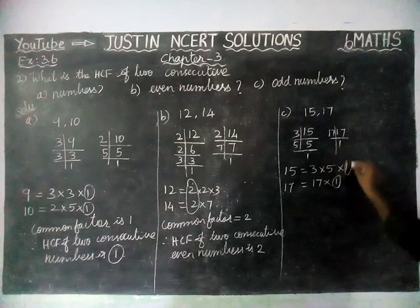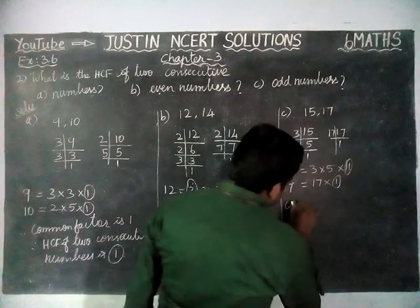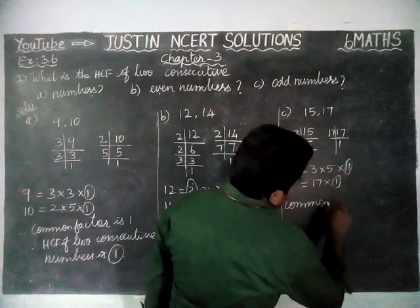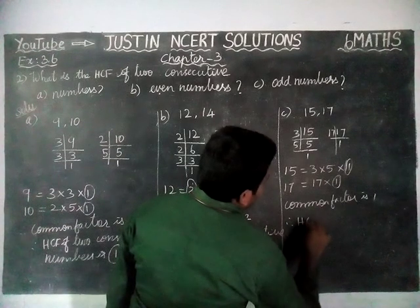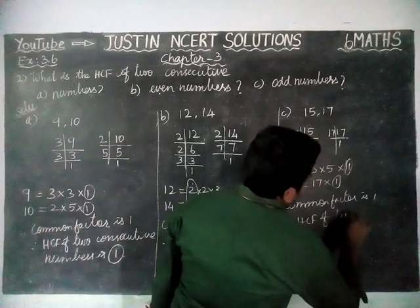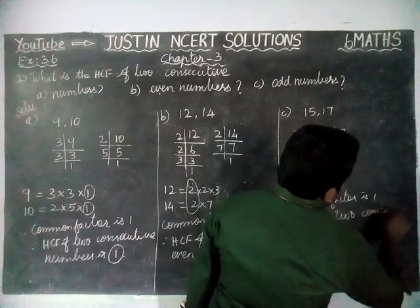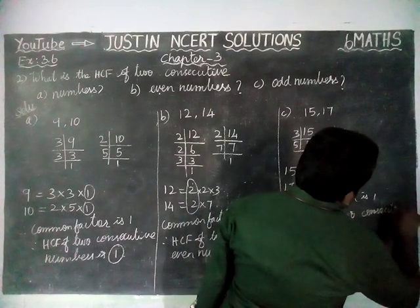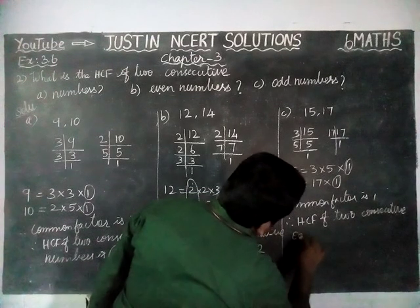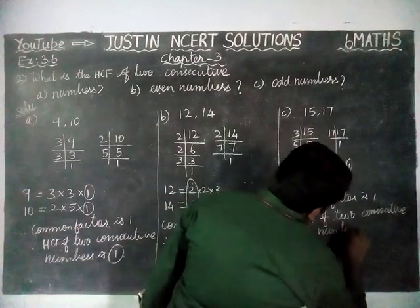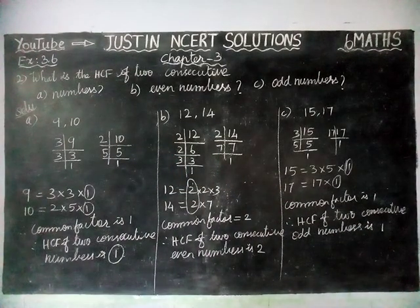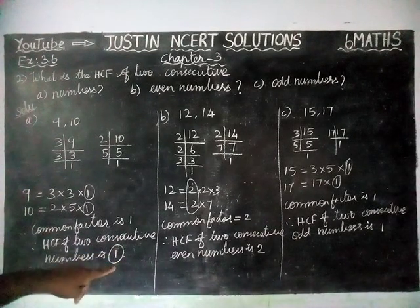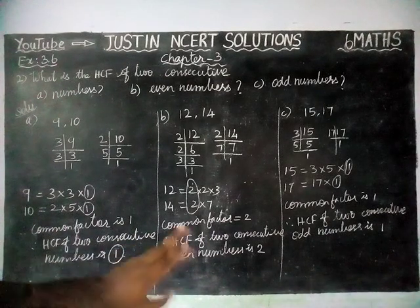We have only 1 as a common factor. Therefore, the HCF of 2 consecutive odd numbers is 1. So to summarize: HCF of 2 consecutive numbers is 1, HCF of 2 consecutive even numbers is 2, and HCF of 2 consecutive odd numbers is 1.